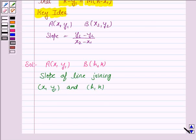is given to be m. And the slope joining these points is given by k minus y1 upon h minus x1, and this is equal to m.